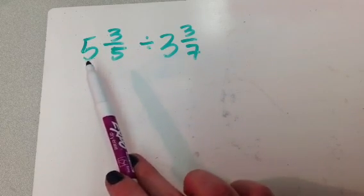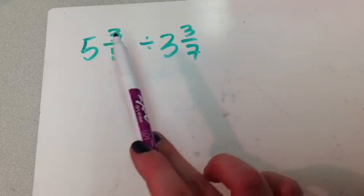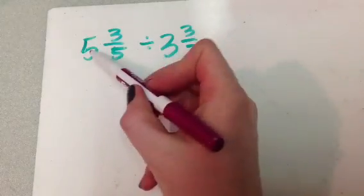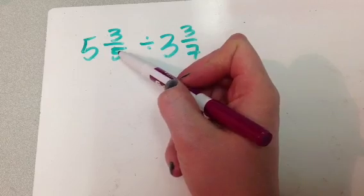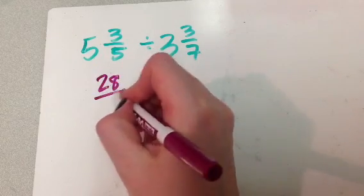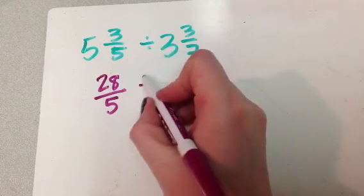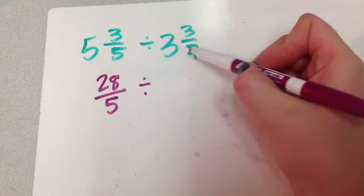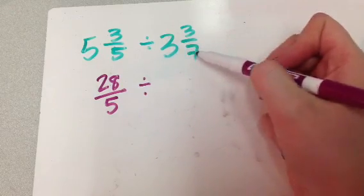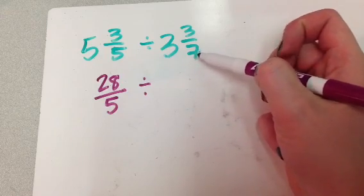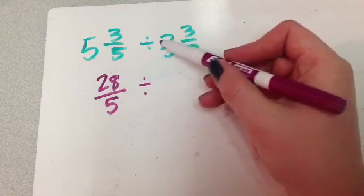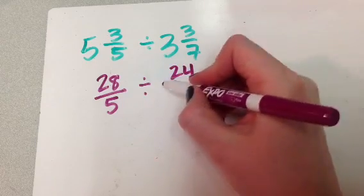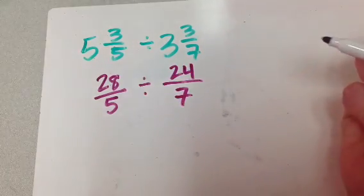The first thing I do is recopy my problem, creating my new improper fractions. I leave this the same, okay? 5 times 5 is 25, plus 3 is 28. Bottom number stays the same. I'm going to leave it as a division problem for just a second longer. 3 times 7 is 21, plus 3 is 24. My bottom number is going to stay the same.